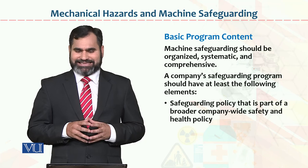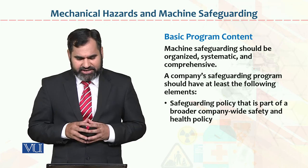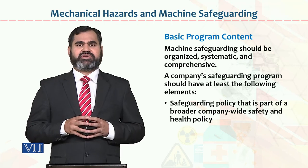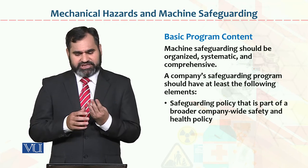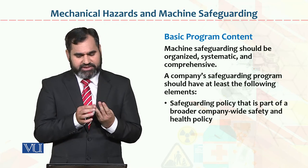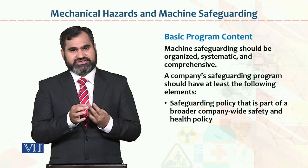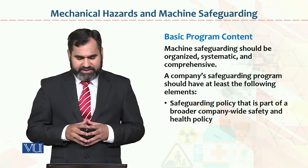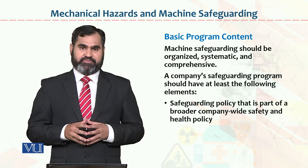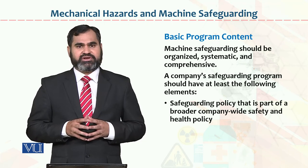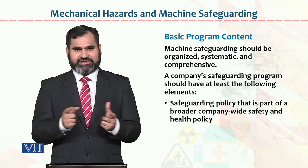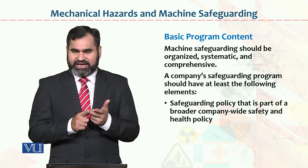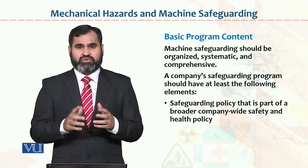Basic program content: machine safeguarding should be organized, systematic, and comprehensive. A company safeguarding program should have at least the following elements. Safeguarding policy is a general outline which includes procedures, rules, and regulations. Organizations need to design the contents in order to achieve the organizational goal.